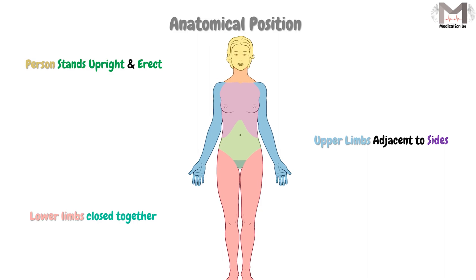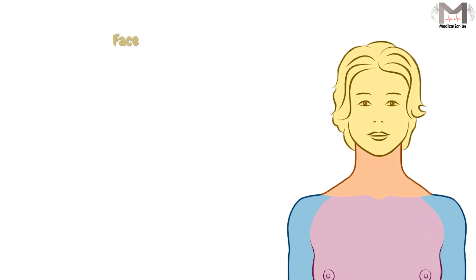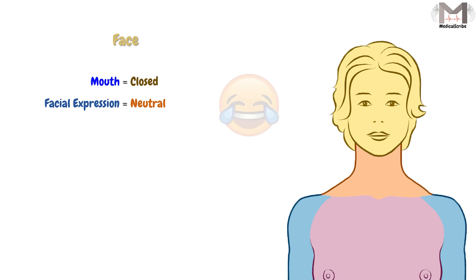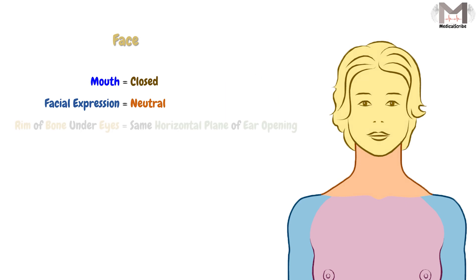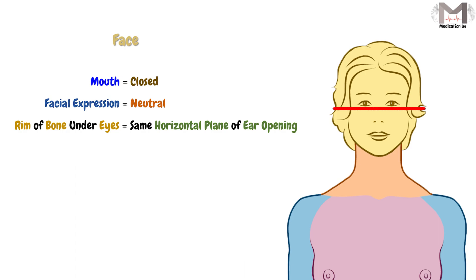The details are: in the face, the mouth is closed and the facial expression is neutral, not laughing or crying. The rim of bone under the eyes is in the same horizontal plane as that of the ear opening. The eyes are open and look anteriorly.